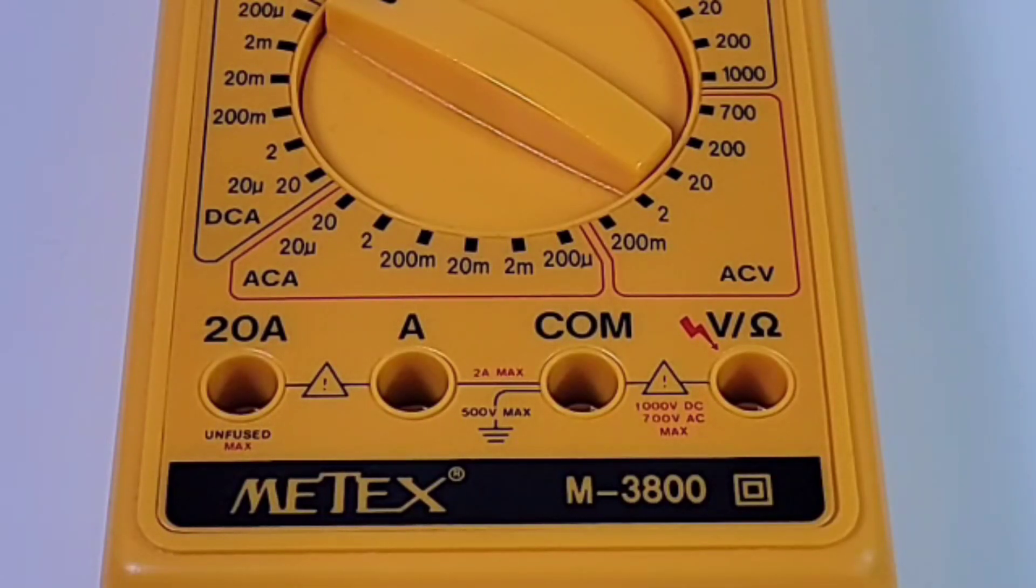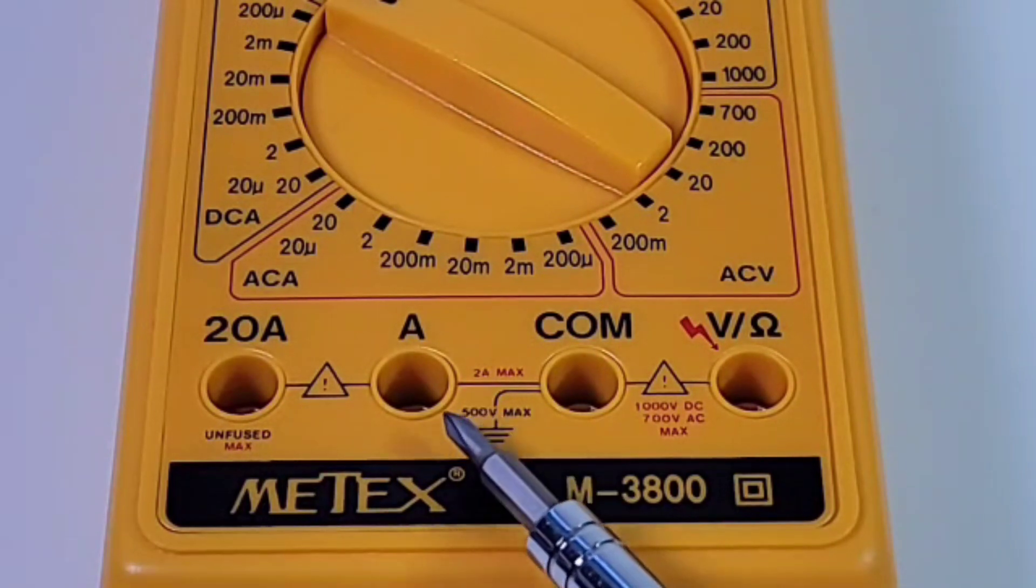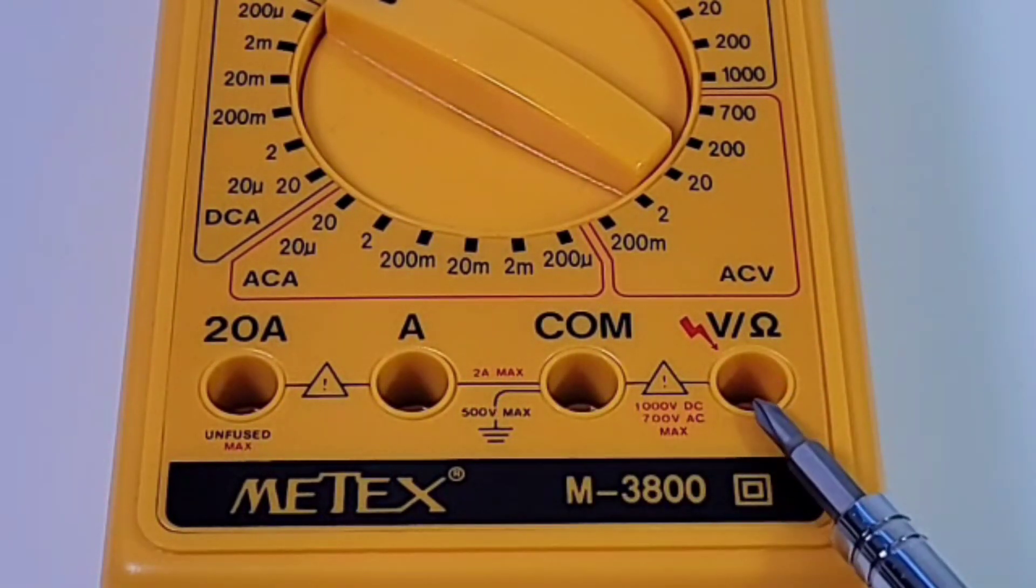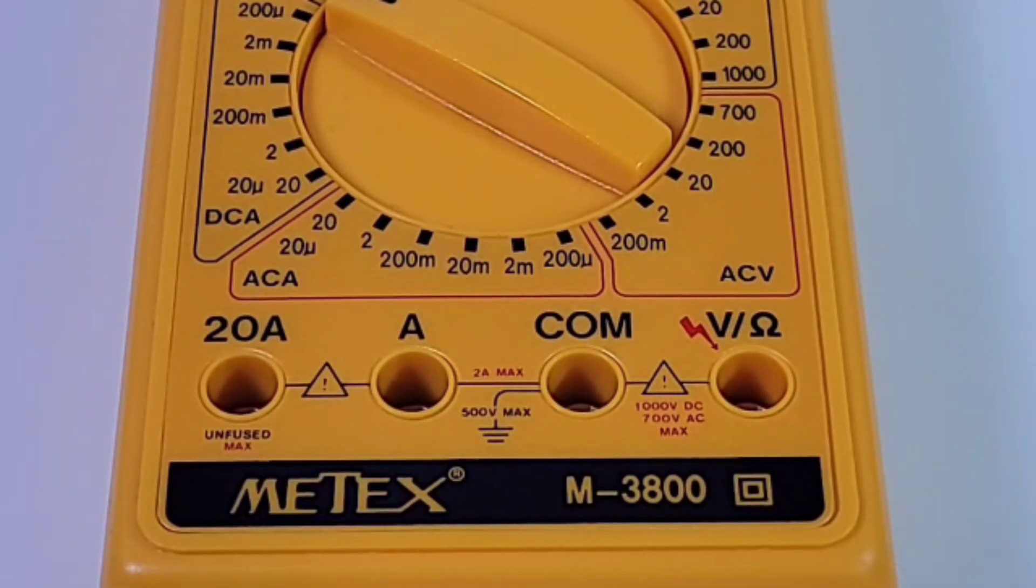As well, if you look at those input jacks, 20 amps is what they were boasting way back in the day. Unfused as well. So pretty high. Here is our milliamp jack and it says up to two amps max and the common ground as well as the voltage and resistance. And it does 20 mega ohms in terms of resistance. So pretty, pretty good considering we're talking like 1994.